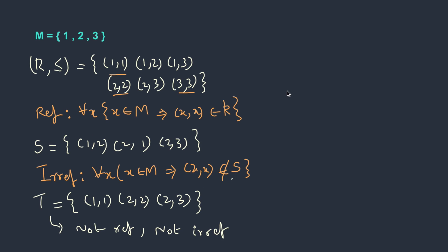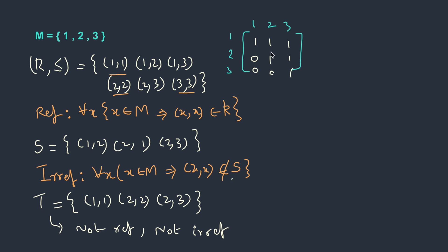Sometimes it becomes easier to identify relation properties based on a diagram. Just focus on the diagonal elements. If the matrix has all the diagonal elements, it means that it is a reflexive relation.